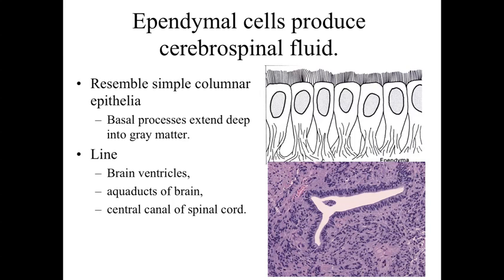However, the processes of ependymal cells do not end at a basal lamina as a true epithelial cell would. Instead, these ependymal cells have basal processes that extend down deep within the gray matter. Because of that, they resemble simple columnar epithelia but are not a true epithelia — they are specialized ependymal cells for producing cerebrospinal fluid.